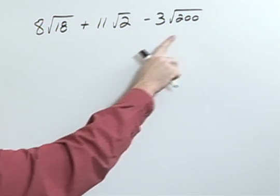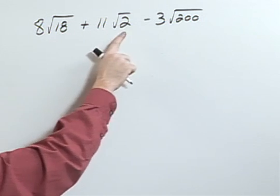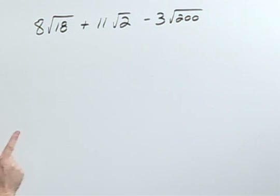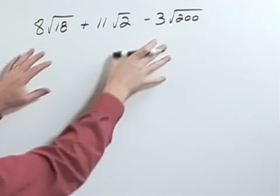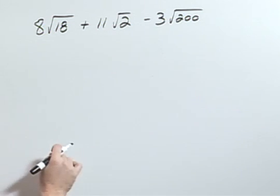I want to add or subtract these, but notice that I can't because I don't have the same radicand. But one of the things I might try to do is to simplify those and then see where we're at.